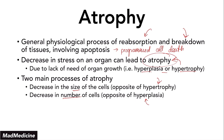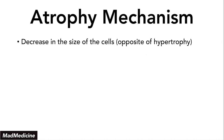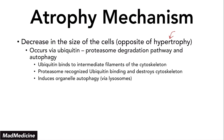Let's talk about the decrease in size of cells — the opposite of hypertrophy. This happens via the ubiquitin-proteasome degradation pathway and autophagy. Ubiquitin binds to the intermediate filaments of the cytoskeleton, and proteasomes in the cytoskeleton recognize the ubiquitin-tagged cytoskeleton and destroy it. When the cytoskeleton is gone, organelles like lysosomes induce organelle autophagy, leading to destruction of the cell and a decrease in cell size.